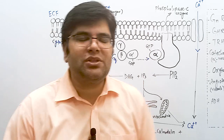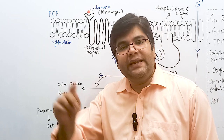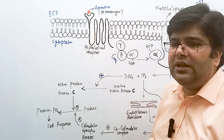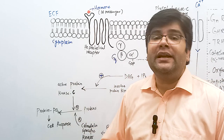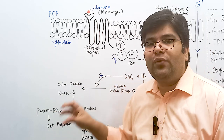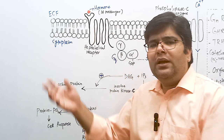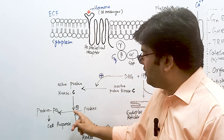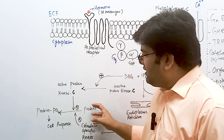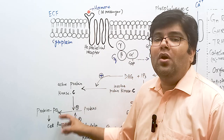In the cyclic AMP second messenger system, cyclic AMP caused activation of protein kinase A. Here, the kinase enzyme is protein kinase C, activated by DAG. These kinases are activated by phosphorylation — the phosphate group coming from ATP — and they are also responsible for phosphorylating other proteins in the cell. When protein kinase C is activated, it causes phosphorylation of other proteins in the cytoplasm, most of which are enzymes. Some are activated and some are inhibited, producing a physiological response.